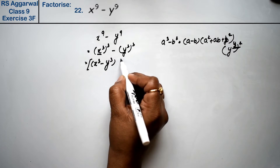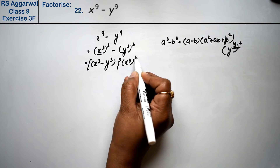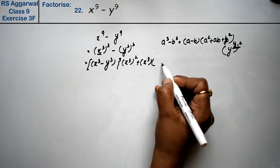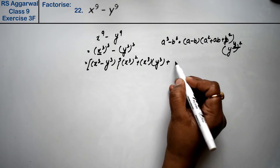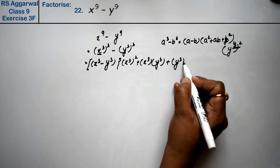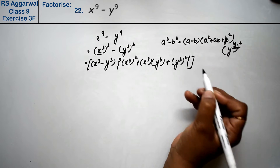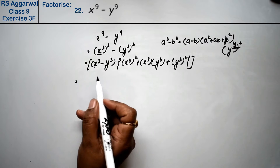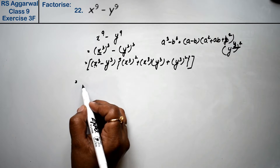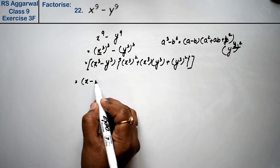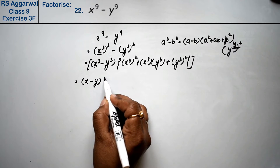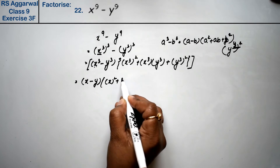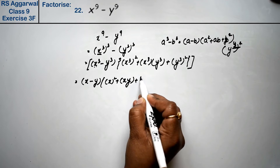Now substituting: x cube whole square plus x cube into y cube plus y cube whole square. This should be a cube minus b cube, so let's solve this. a cube minus b cube equals a minus b, times a square plus ab plus b square.